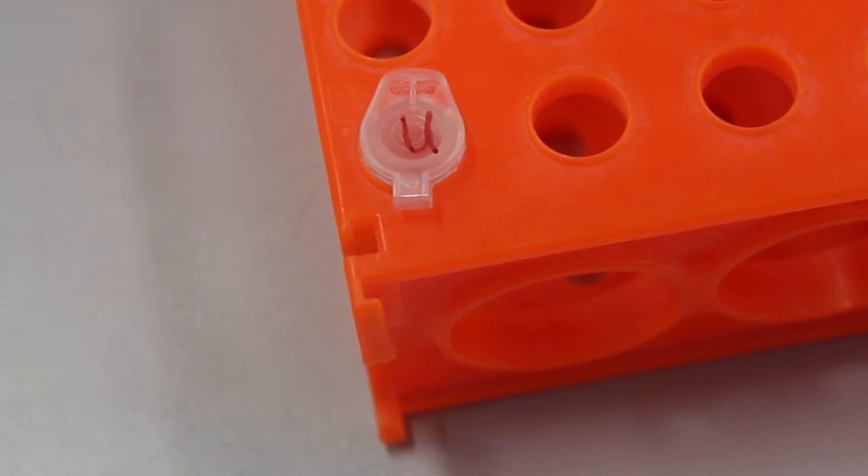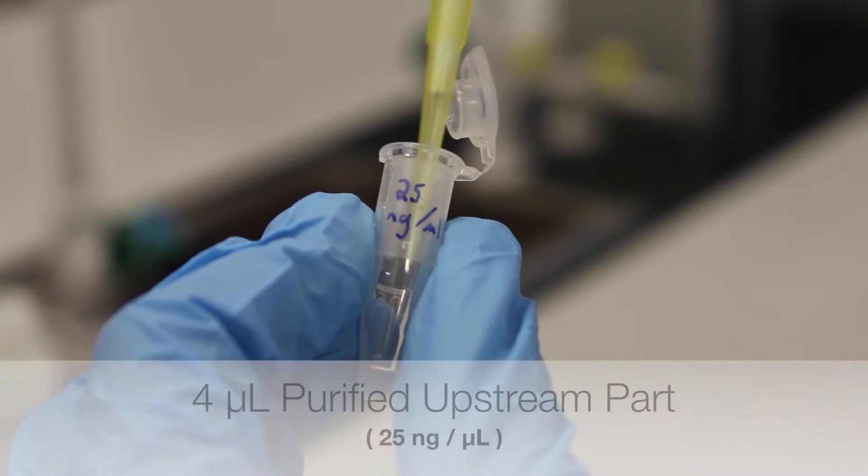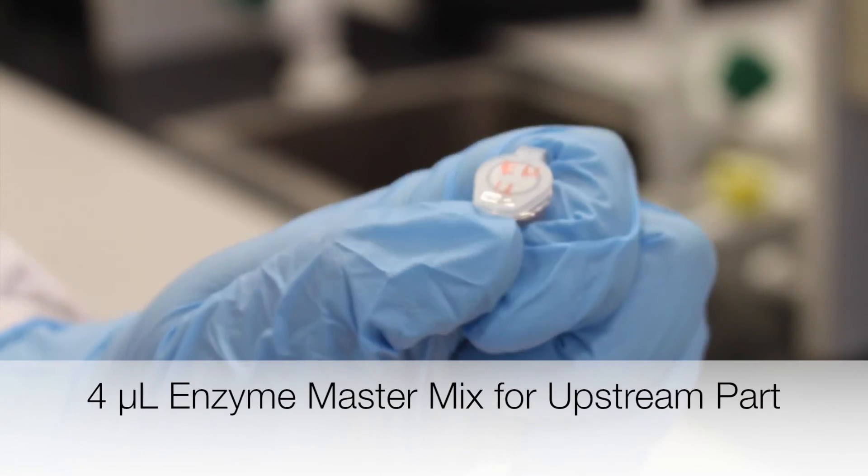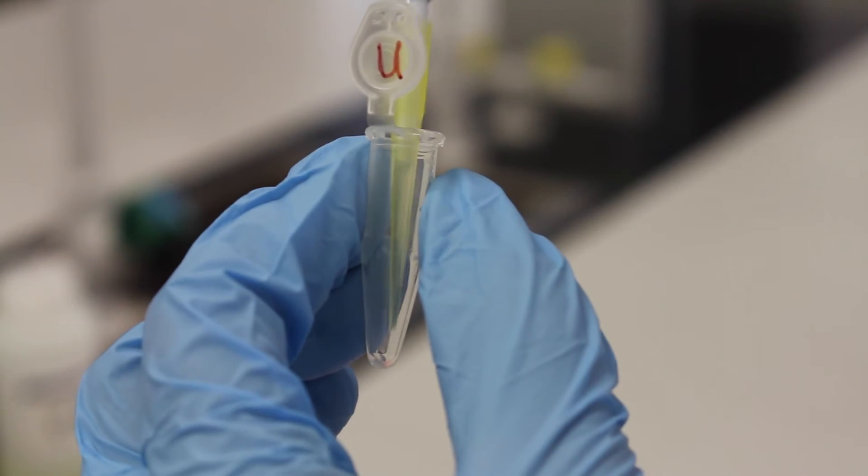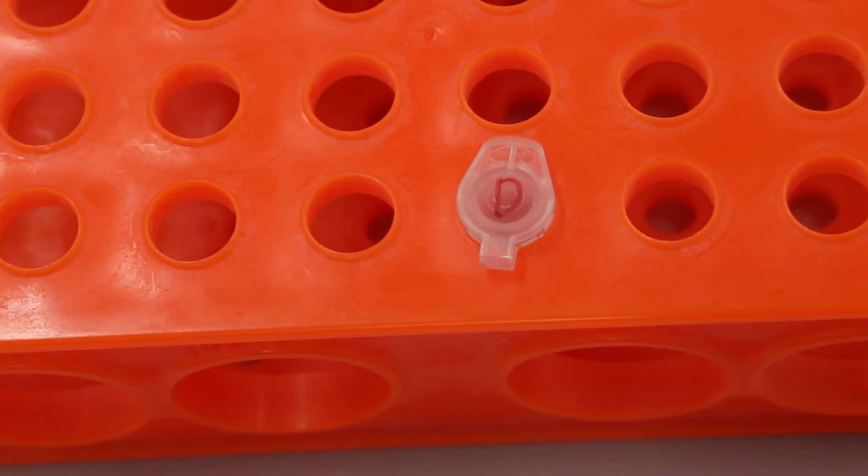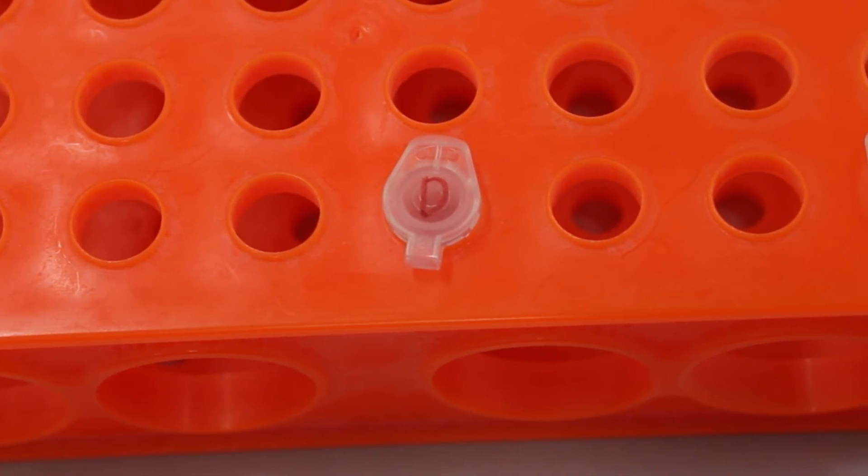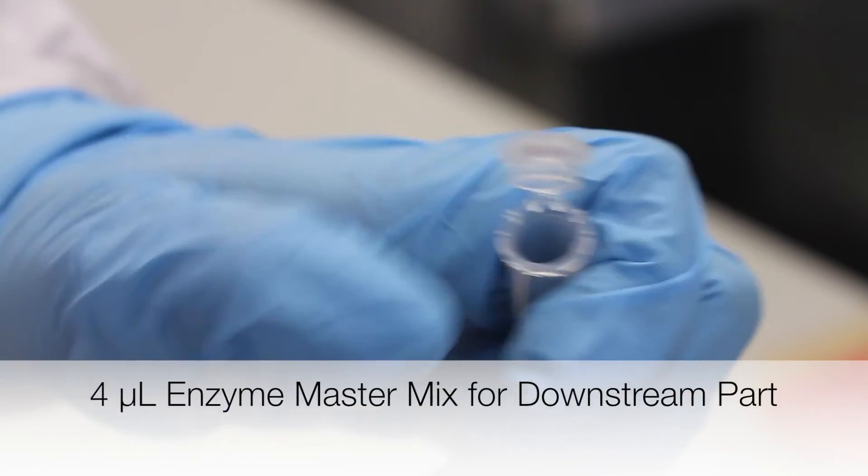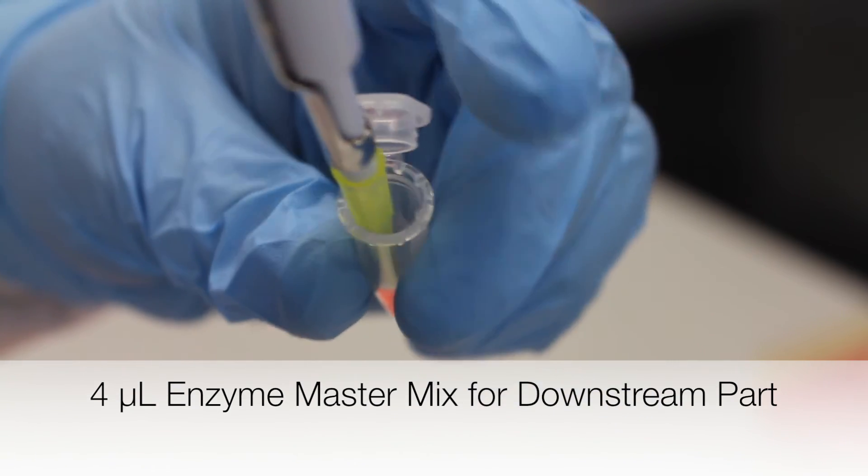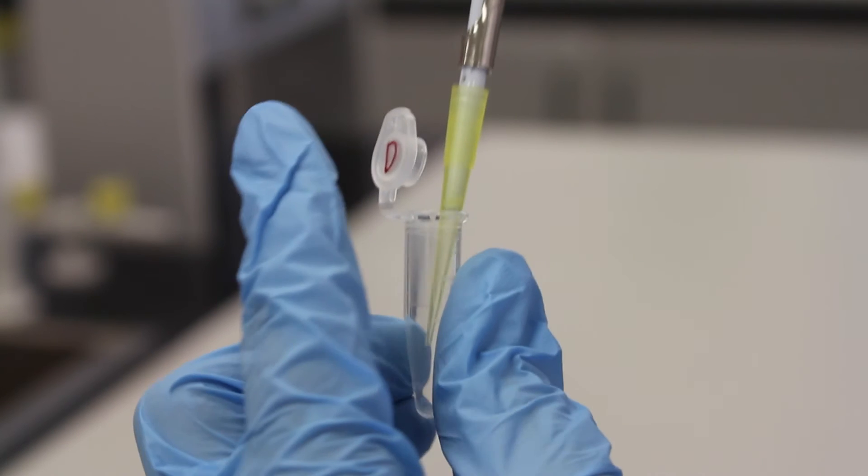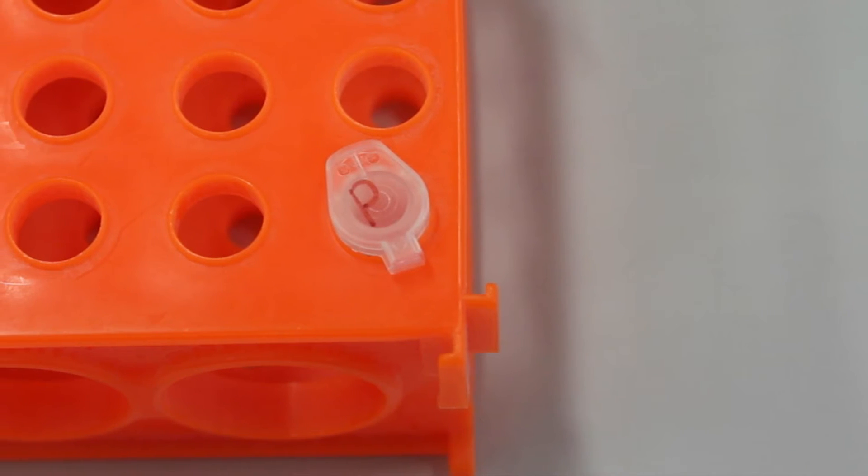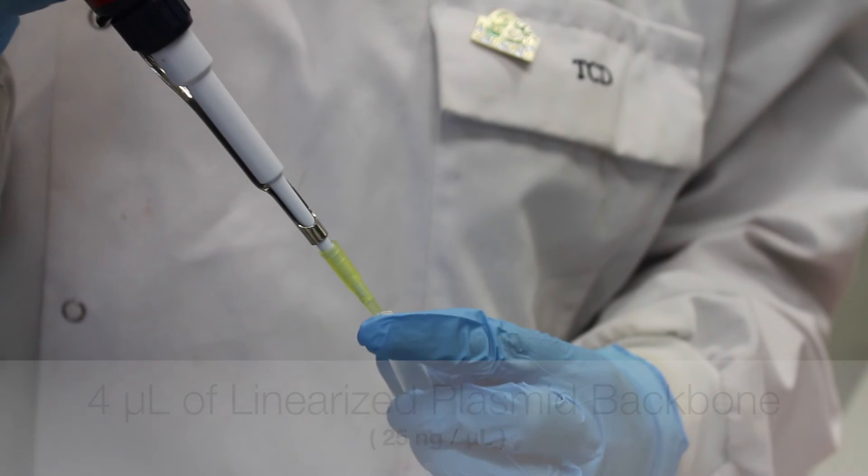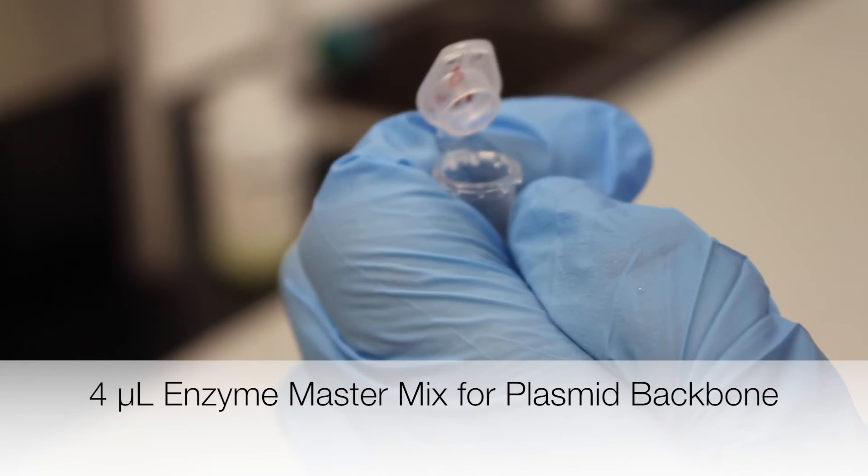To digest the upstream part, the following are added to a new Eppendorf tube: 4 microliters of the purified upstream part and 4 microliters of the enzyme master mix for the upstream part. To digest the downstream part, the following are added to a new Eppendorf tube: 4 microliters of the purified downstream part and 4 microliters of the enzyme master mix for the downstream part. To digest the plasmid backbone, the following are added to a new Eppendorf tube: 4 microliters of linearized plasmid backbone and 4 microliters of enzyme master mix for plasmid backbone.